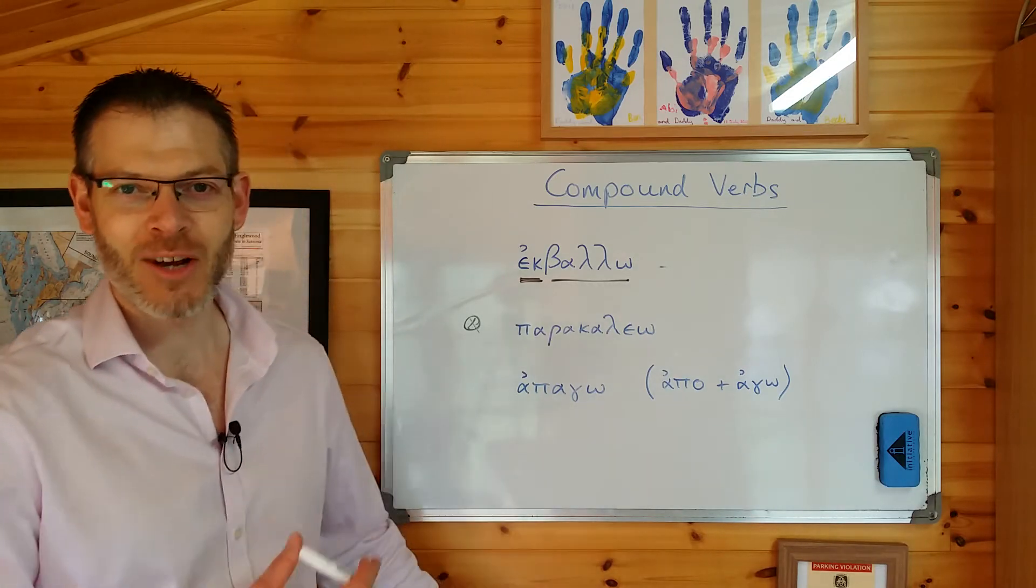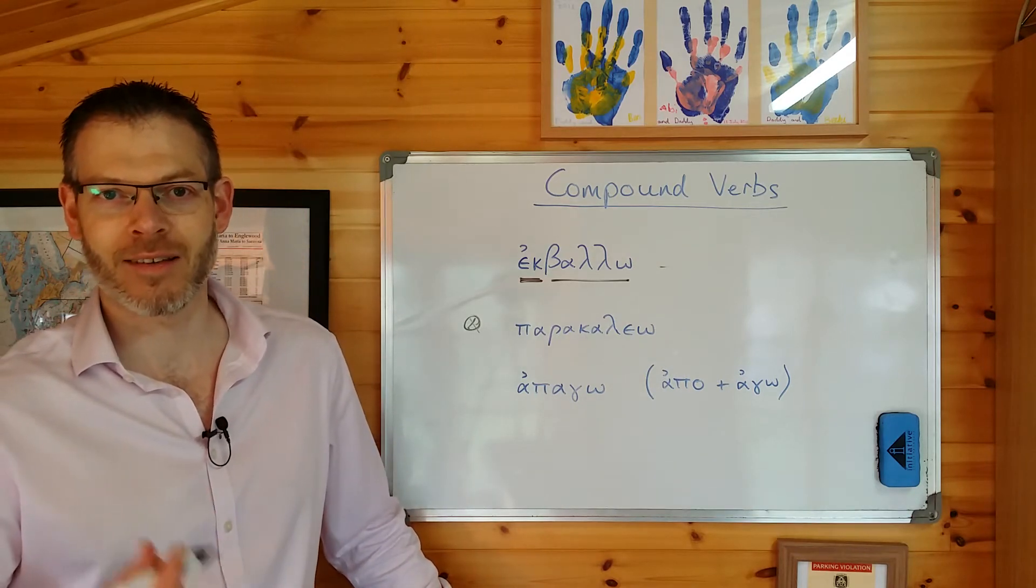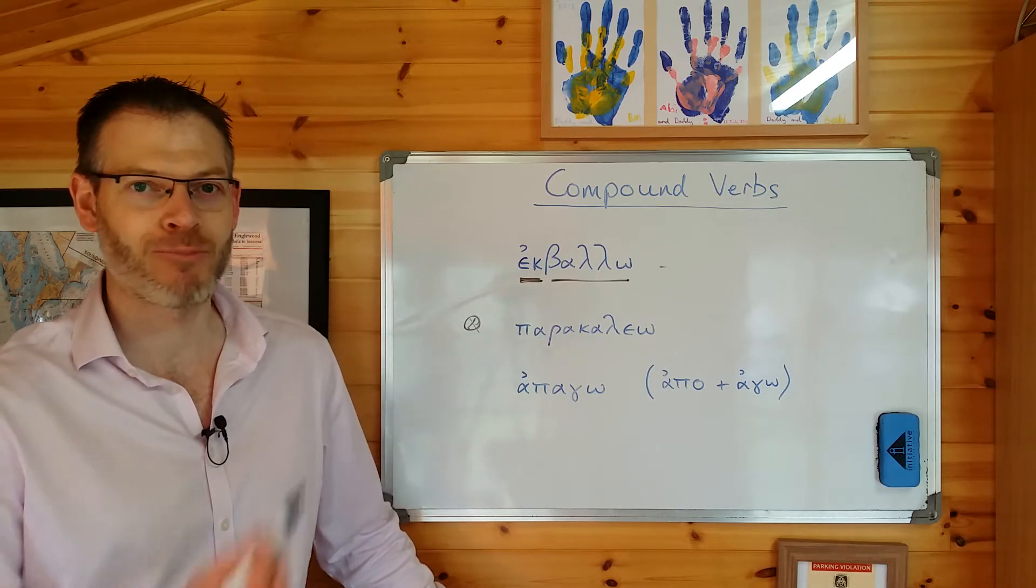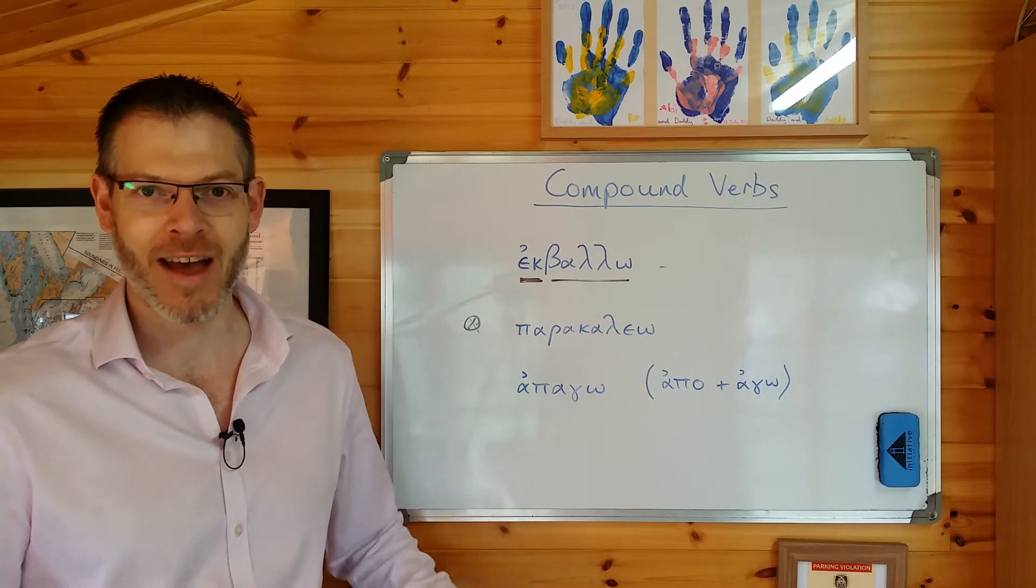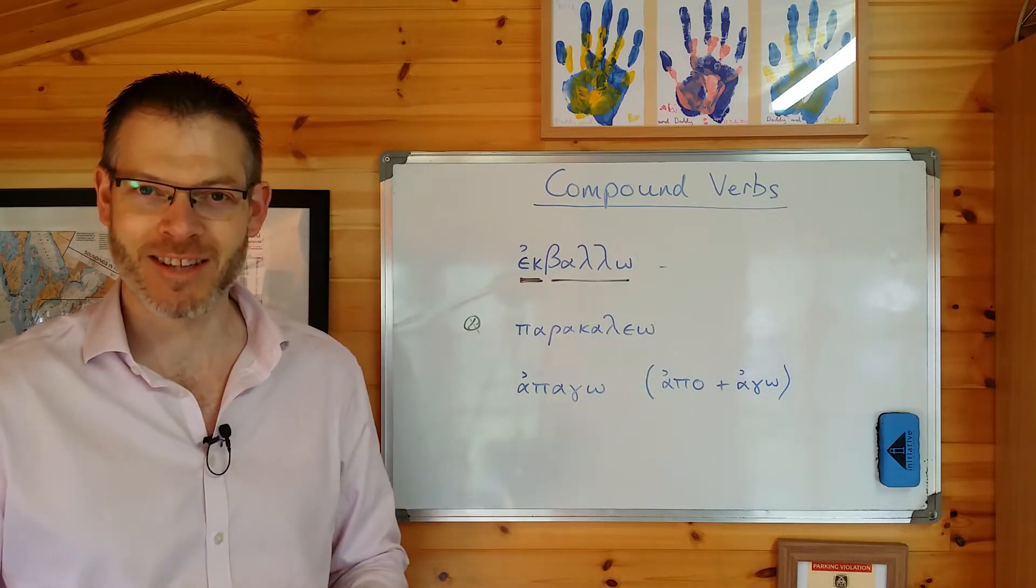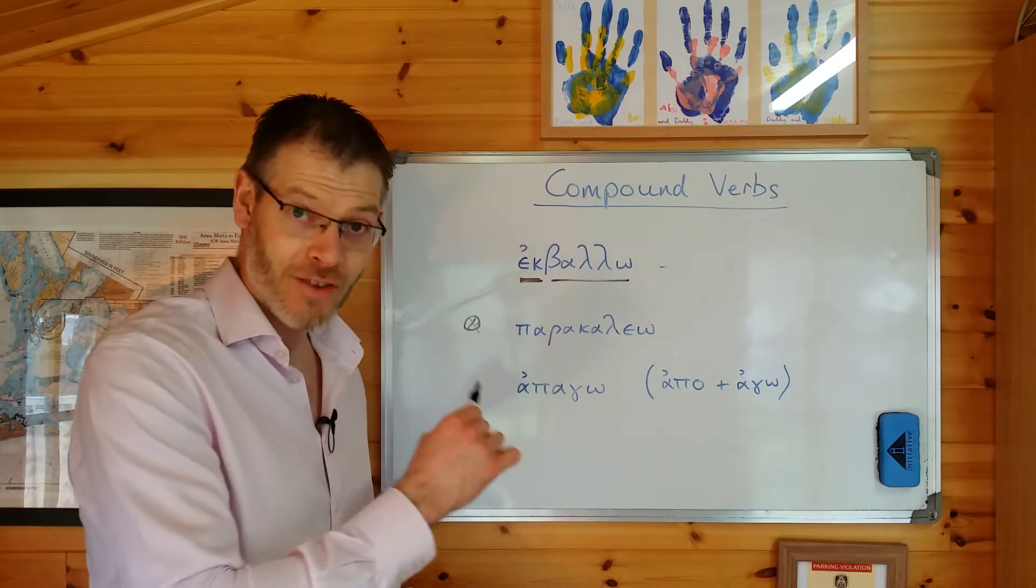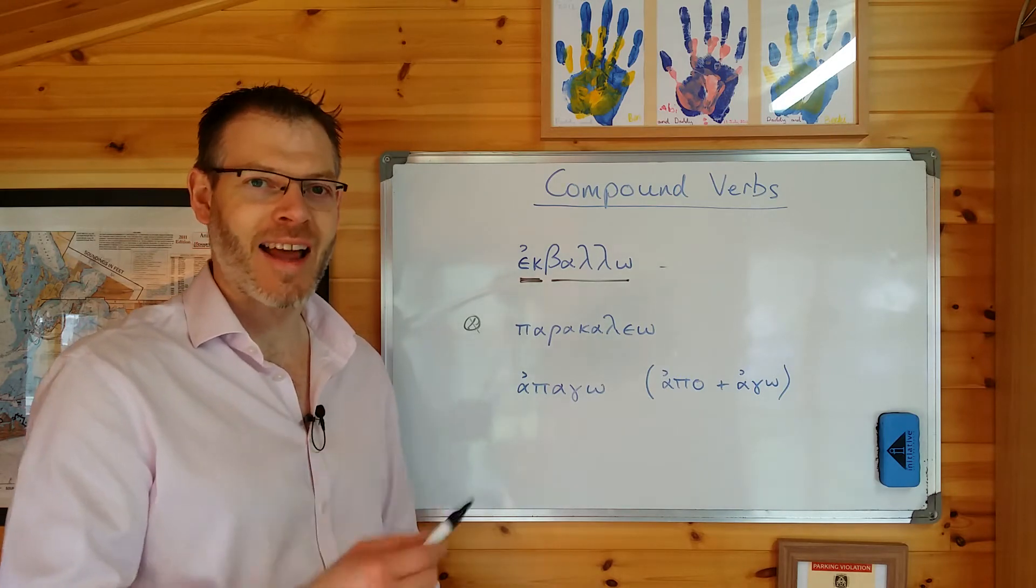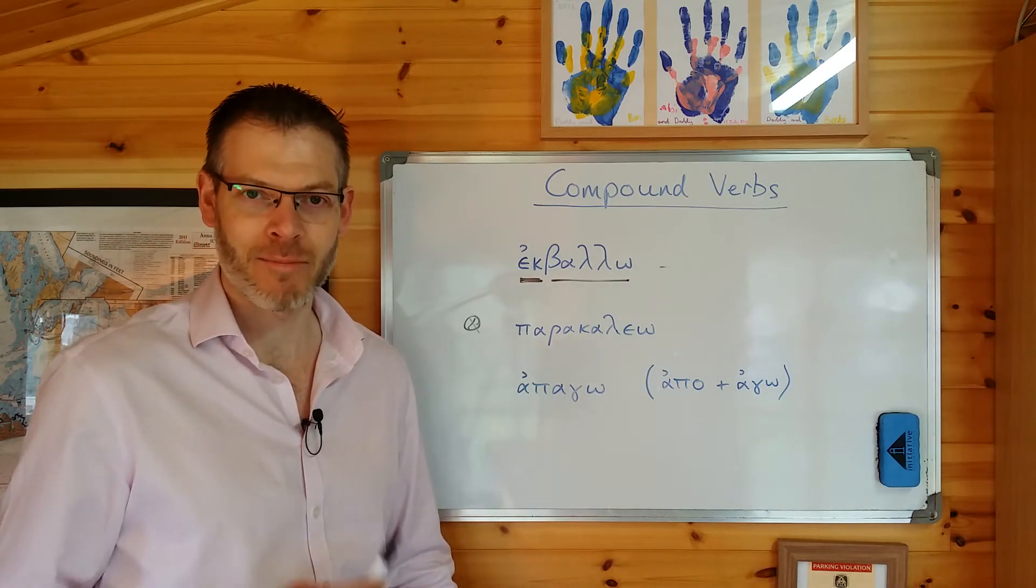Think of a compound verb as a linguistic version of a chemical compound. The compound water is a compound of hydrogen and oxygen but its properties are not a kind of mixture of the properties of hydrogen and oxygen. They're completely different properties all together. Well a compound verb is somewhat analogous to that in the sense that the properties of the word in general terms cannot be figured out by just adding together the properties, so to speak, the definitions of the component parts.